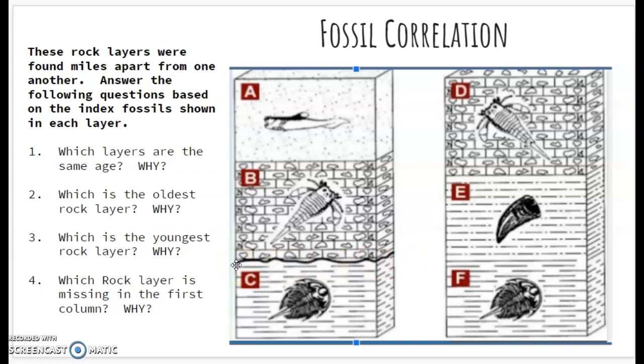And you could also have answered letter A if we were talking about the second column, because letter A should be on top of letter D. But it's not. Maybe it's eroded away. Maybe it's not exposed. But since we're asking about the first column, the correct answer is letter E.